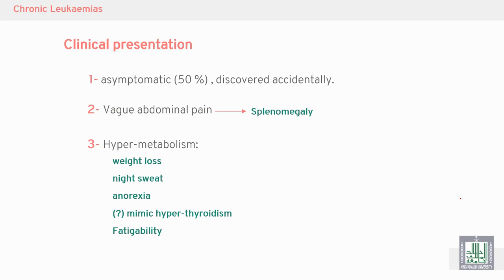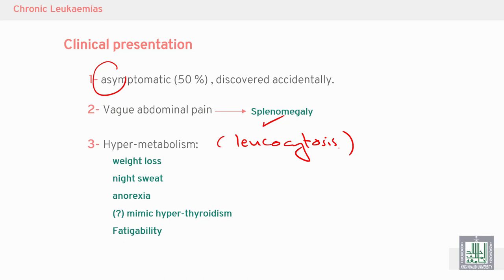Clinically, chronic myeloid leukemia may be asymptomatic in 50% of cases and discovered accidentally. It may present with abdominal pain due to a large spleen — splenomegaly. It can also present with hypermetabolism due to malignancy and increased cell turnover, leading to leukocytosis. A marked increase in the leukocyte count may lead to cachexia, weight loss, night sweats, anorexia, and fatigue — all mimicking hyperthyroidism.